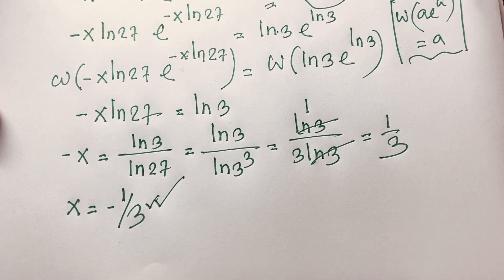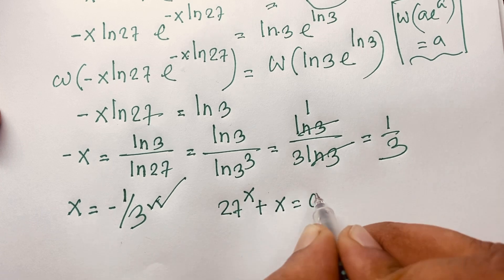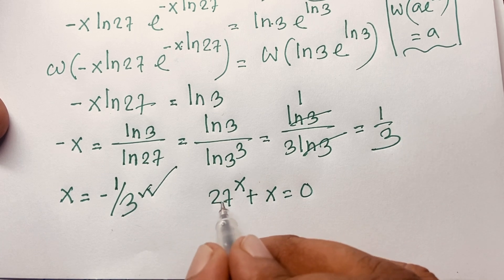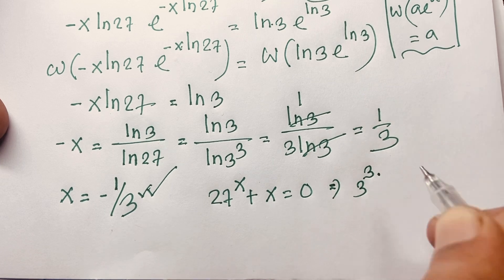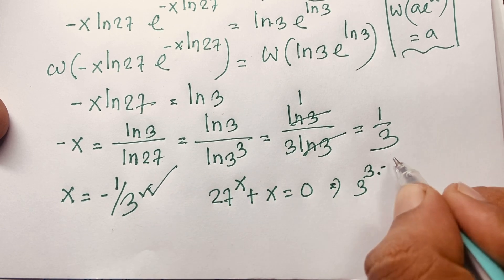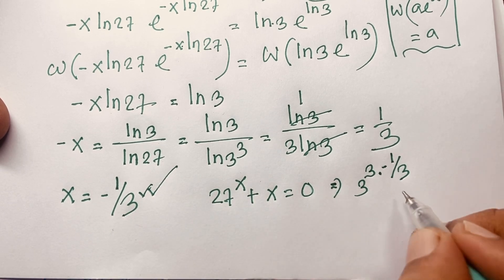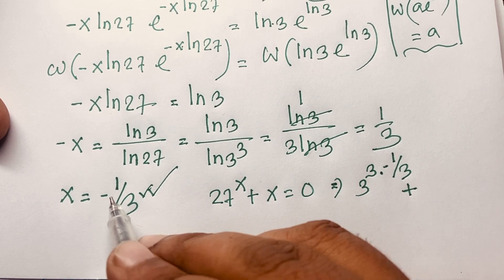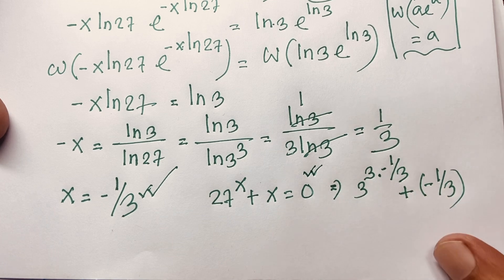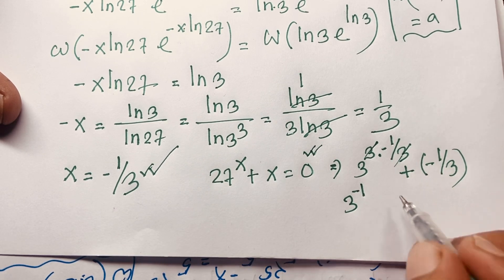Let's verify by substituting x = -1/3 back into 27^x + x = 0. We know 27 = 3^3, so 27^(-1/3) = (3^3)^(-1/3) = 3^(-1). Then 3^(-1) + (-1/3) = 1/3 - 1/3 = 0, confirming the left hand side equals the right hand side.